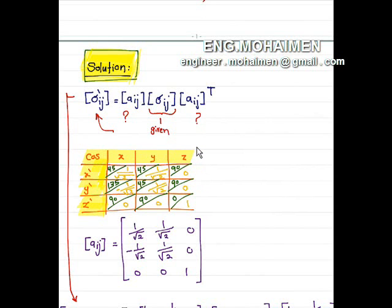We have x, y, z and x-prime, y-prime, z-prime. The angle between x and x-prime is 45 degrees, the angle between y and x-prime is 45 degrees, between z and x-prime is 90 degrees, between x and y-prime is 135 degrees, between y and y-prime is 45 degrees, and between z and y-prime is 90 degrees.